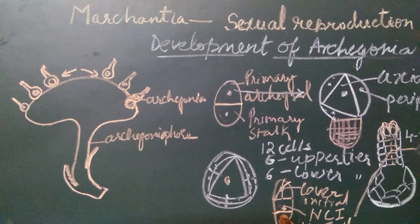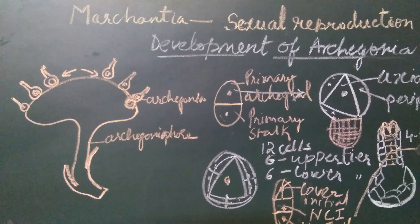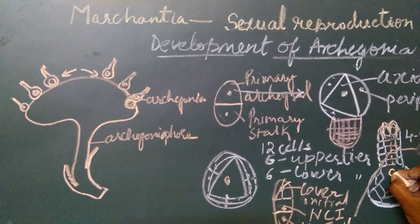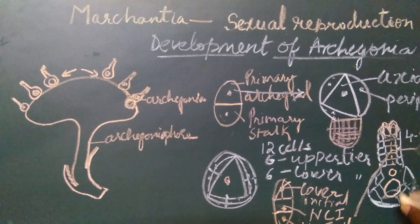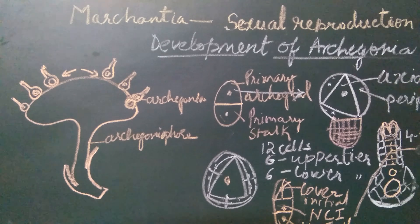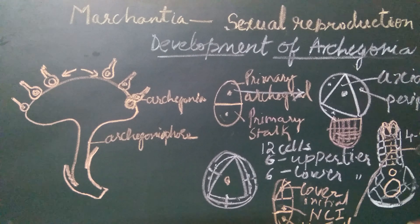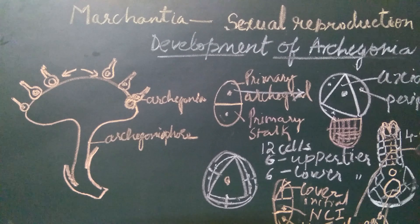The venter canal initial, the lowermost cell, divides unequally forming a smaller cell and a larger cell. The smaller cell is called the venter canal cell and the larger cell is called the egg cell. This is the egg cell and this is the venter canal cell.